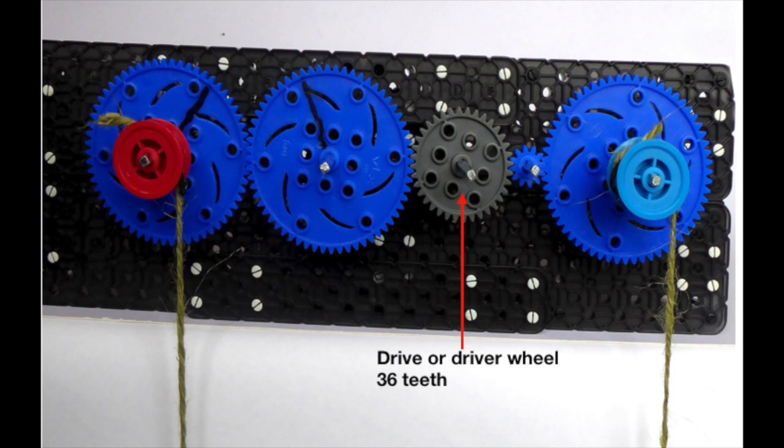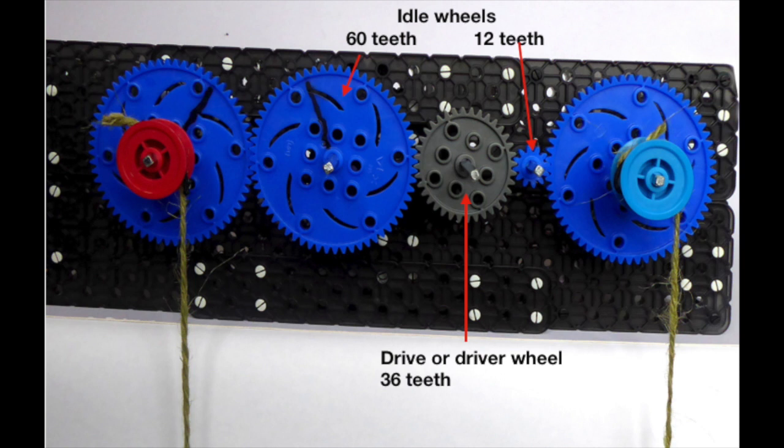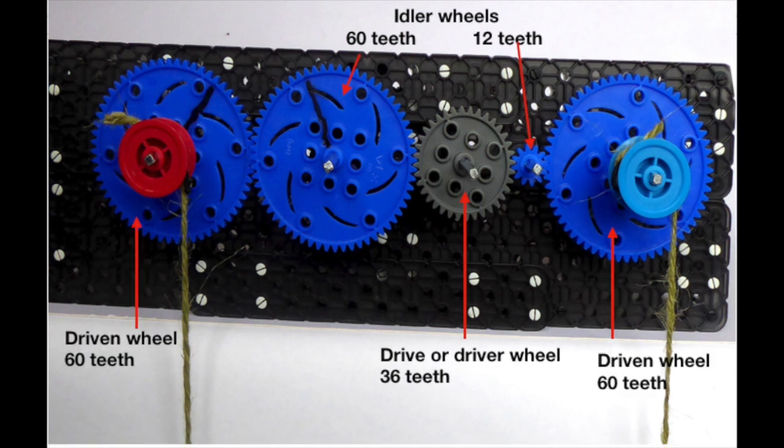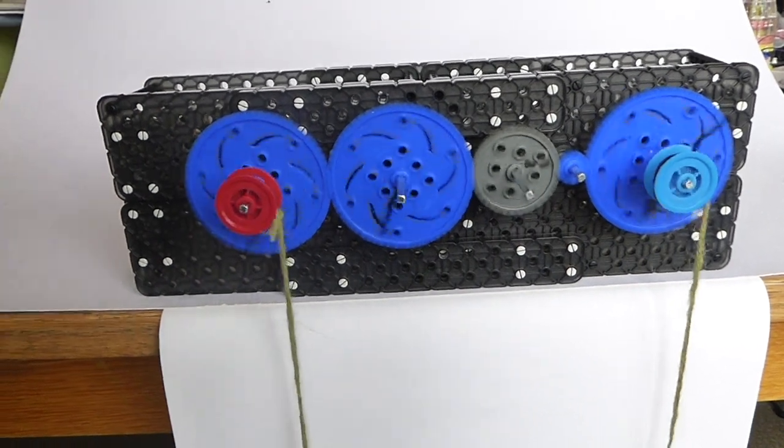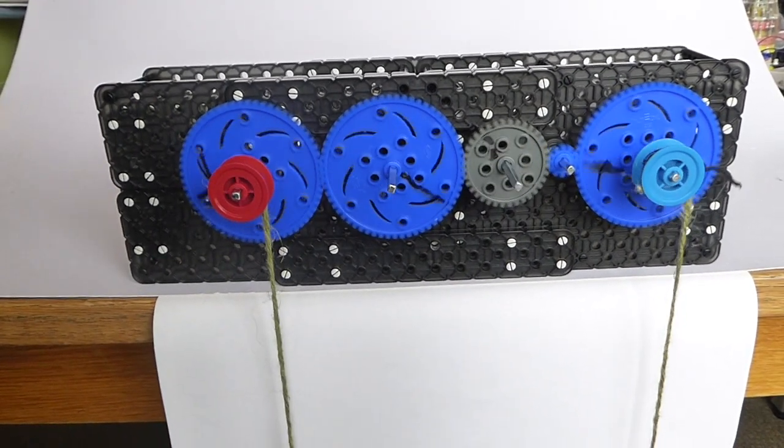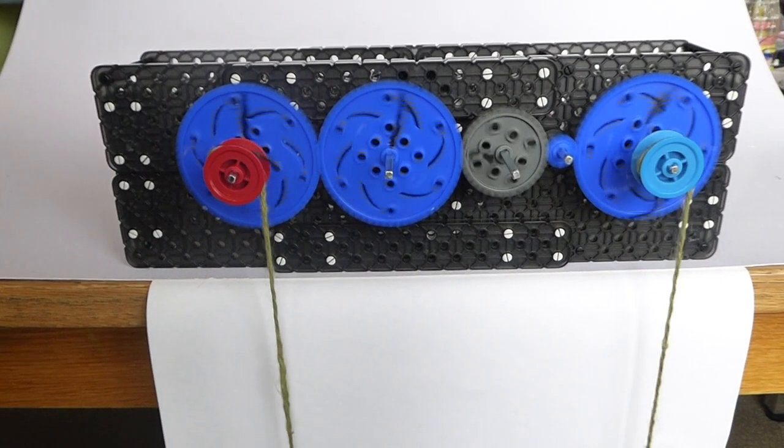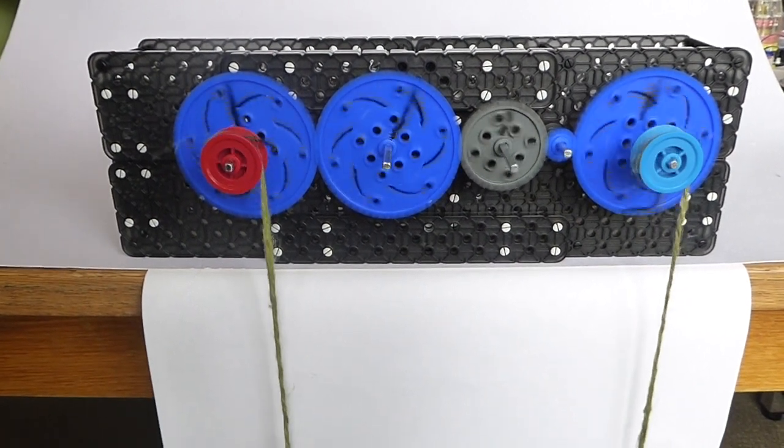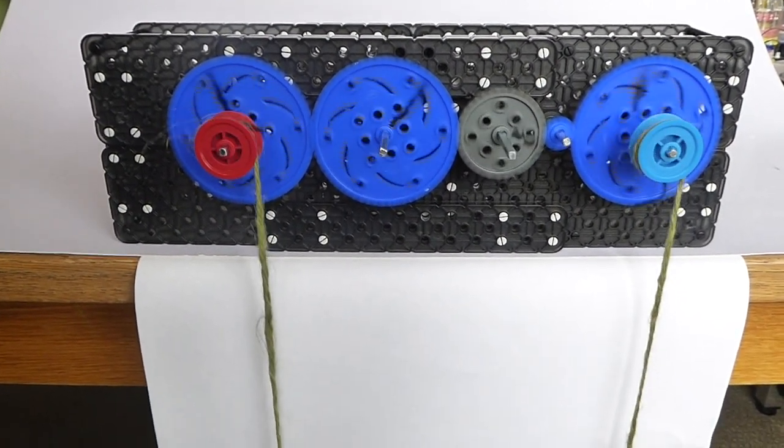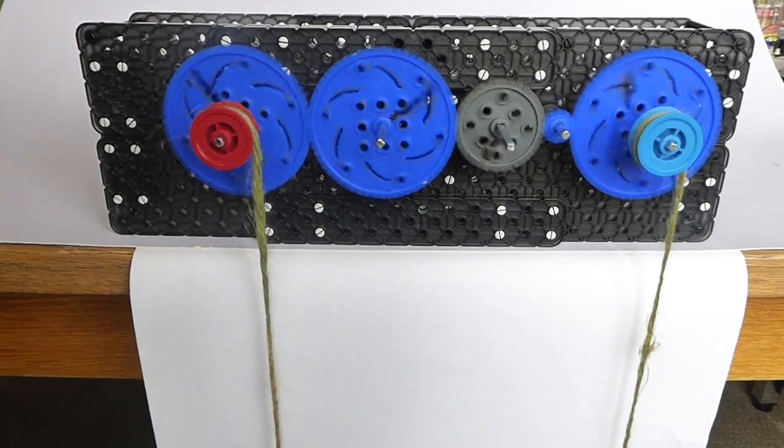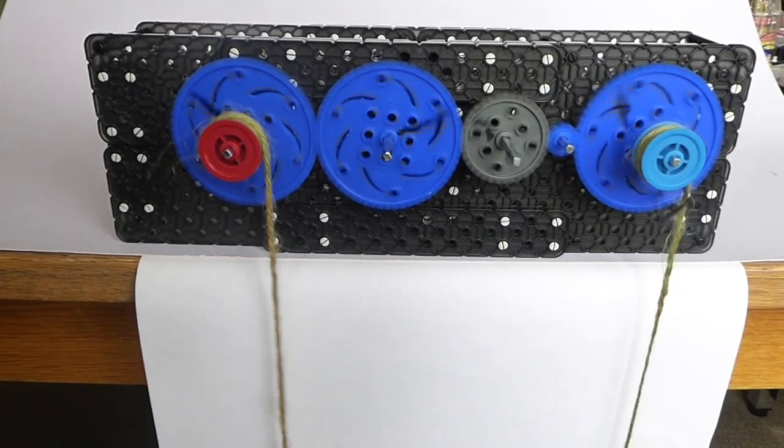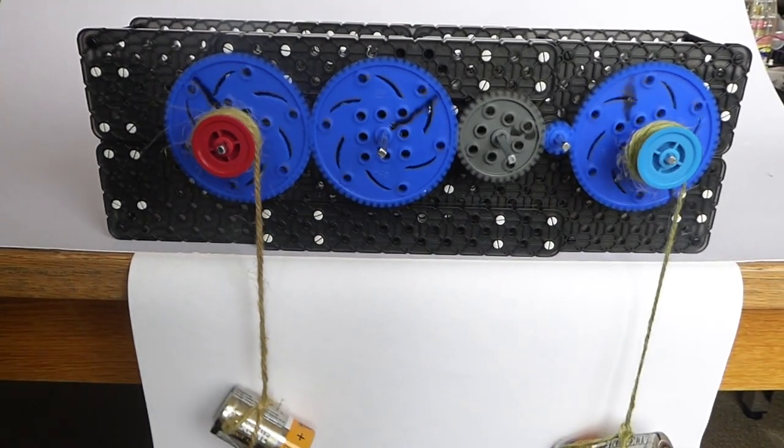So we've got the driver wheel in the centre the two idle or idler wheels meshing with that and then at each end connected to the pulleys are the driven wheels. As we turn the motor on the pulleys both raise the weights on the end of the string and as you'll see they started in the same place and they rise and lift the weight equally.